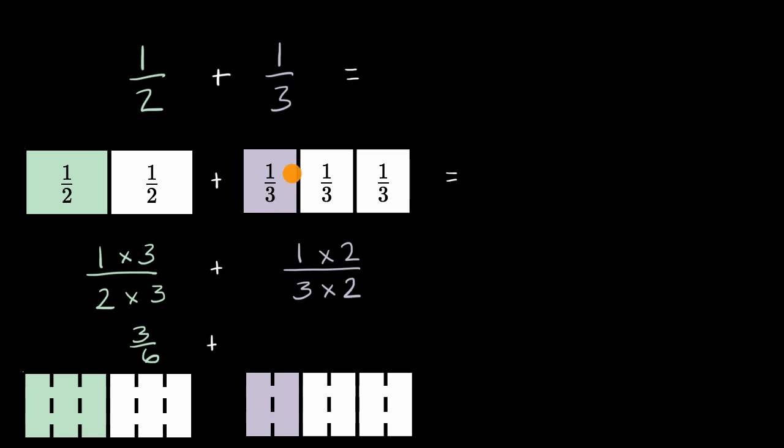...this shaded in gray part is exactly what we have here. But now we took each of these sections and we made them into two sections. So you multiply the numerator and the denominator by two. Instead of thirds, instead of three equal sections, we now have six equal sections.